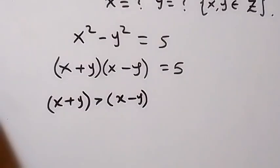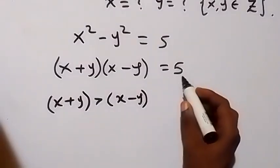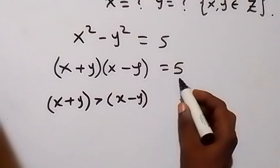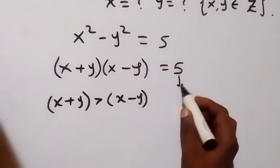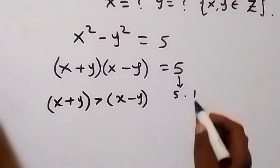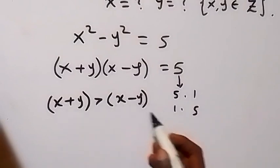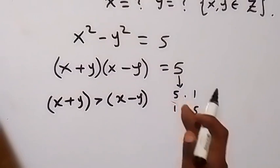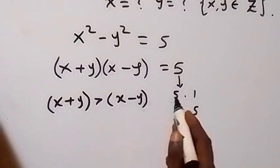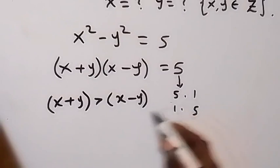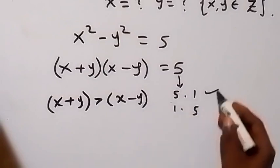Then from here, we can write 5 as 5 times 1, or we can write it as 1 times 5. And since we say x plus y is greater than x minus y, of course x plus y is expected to be 5 and x minus y will be 1. So this will work.